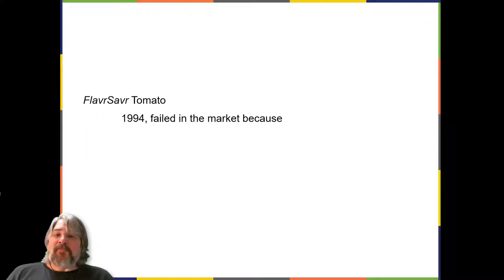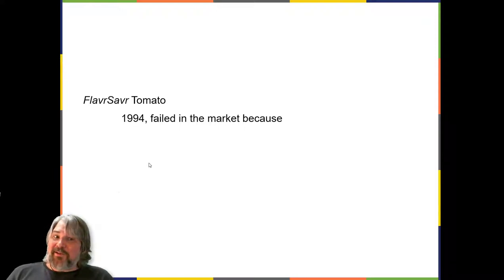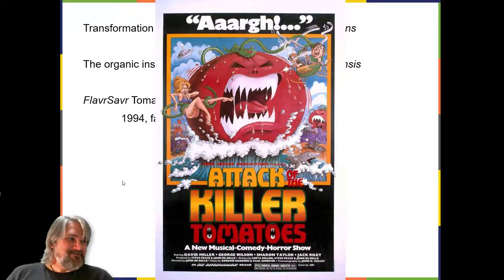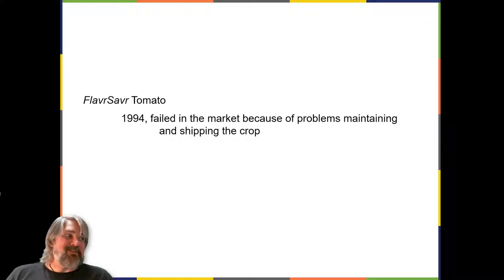Flavor Saver tomato. The first GM crop introduced into the market was the Flavor Saver tomato, produced in 1994. Molecular genetic technology was used to slow down the process of softening and rotting caused by fungal infections, which led to increased shelf life. Additional genetic modification improved the flavor of the tomato. The Flavor Saver tomato did not successfully stay in the market because of problems maintaining and shipping the crop.